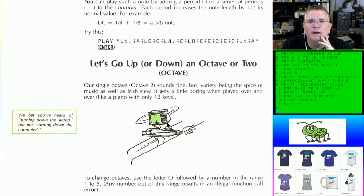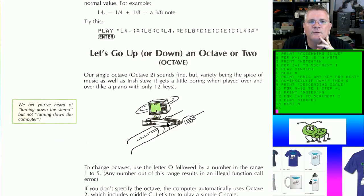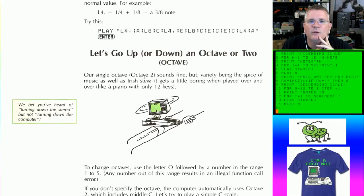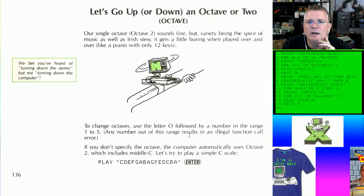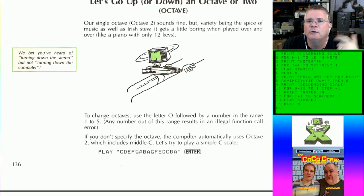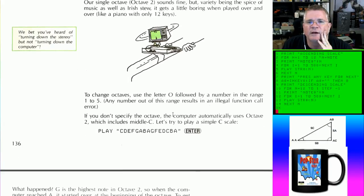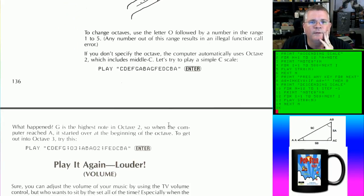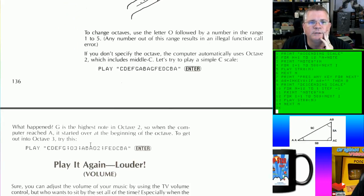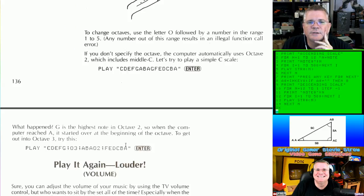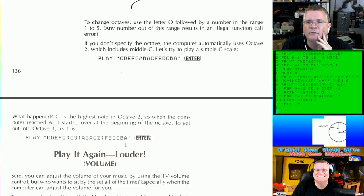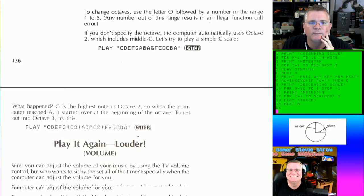You can change octaves and go higher or lower using the O command for octave. There's a total of five octaves. The book teaches you how to play certain notes and change different octaves, then it gets into the V command for volume.